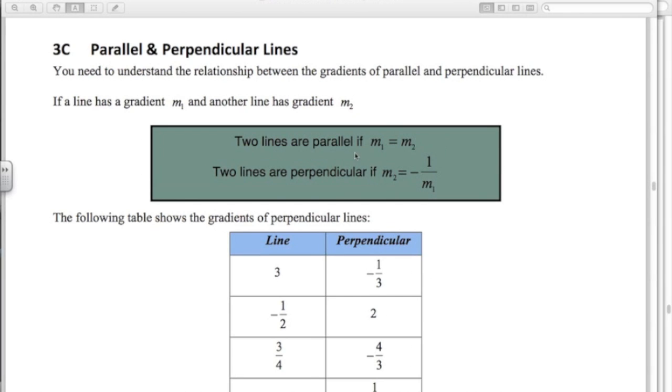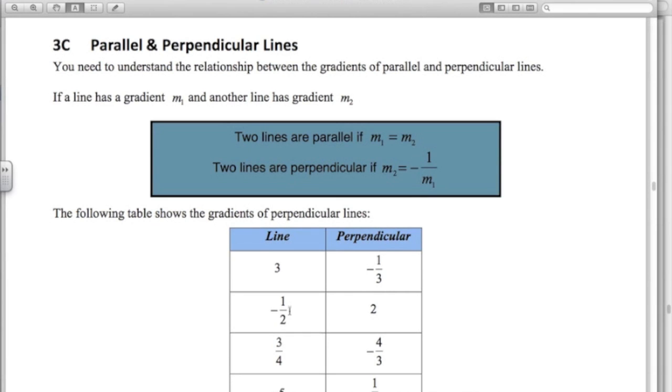If two lines are parallel, the gradients are the same. That's the easy part right there. If we have a line gradient negative 1.5x, the perpendicular will be 2. The negative reciprocal of negative 1.5x. So basically, turn the fraction upside down and change the sign.